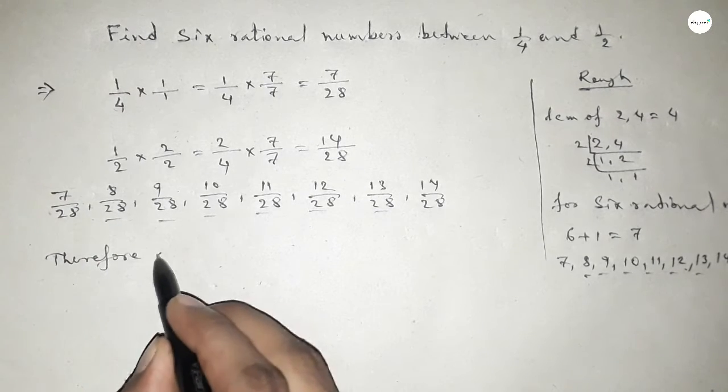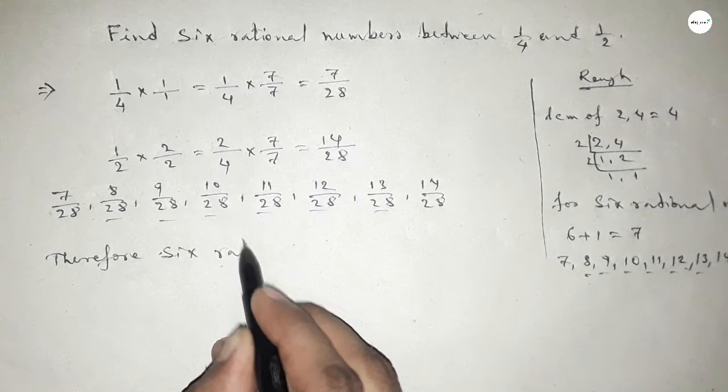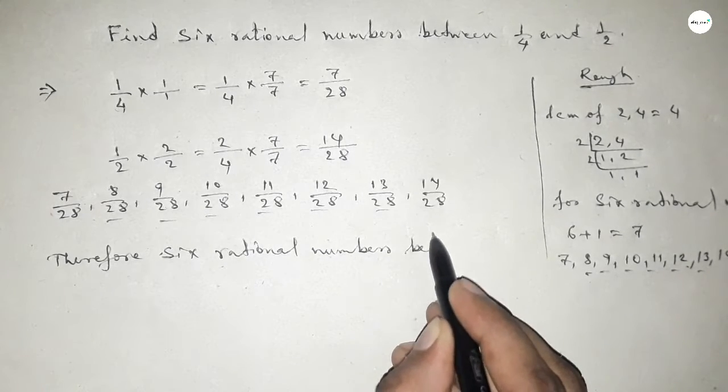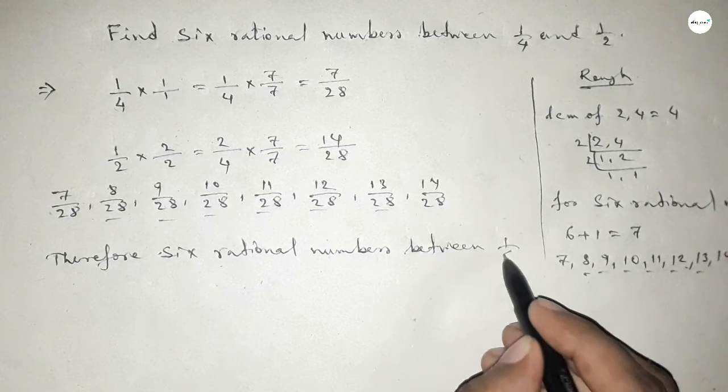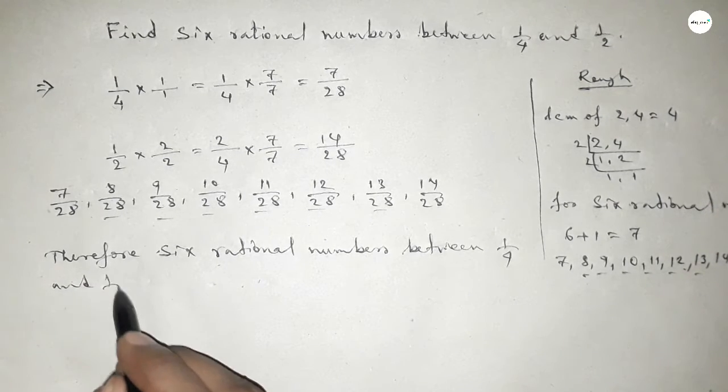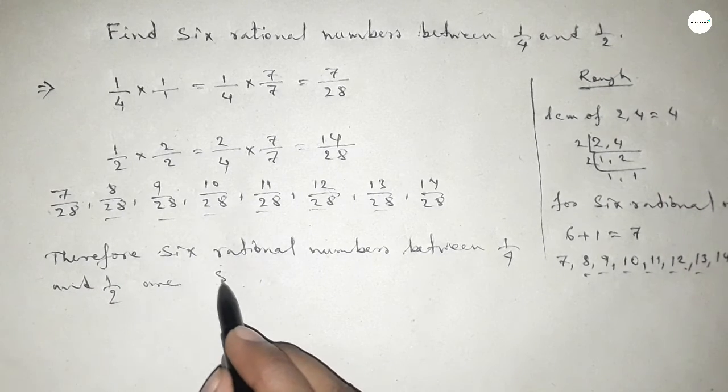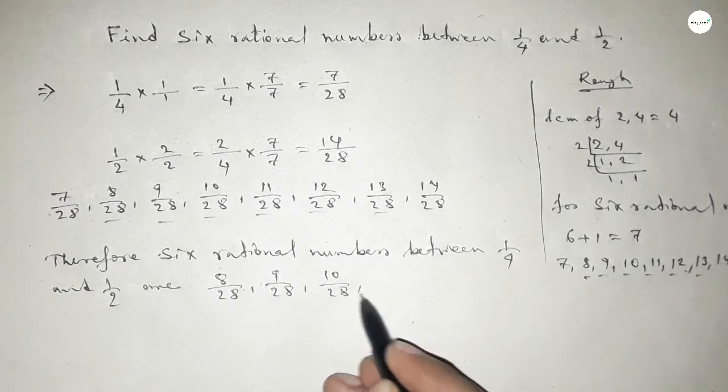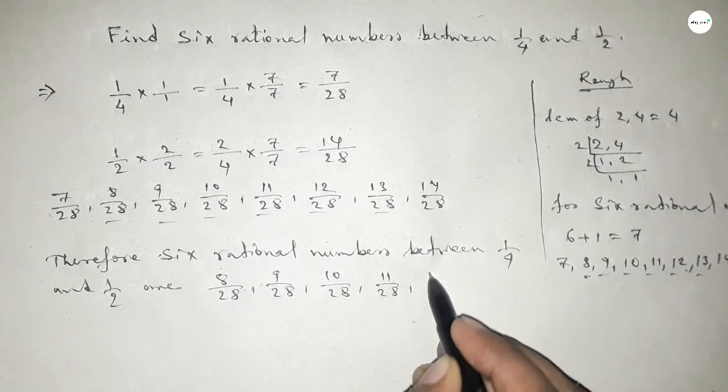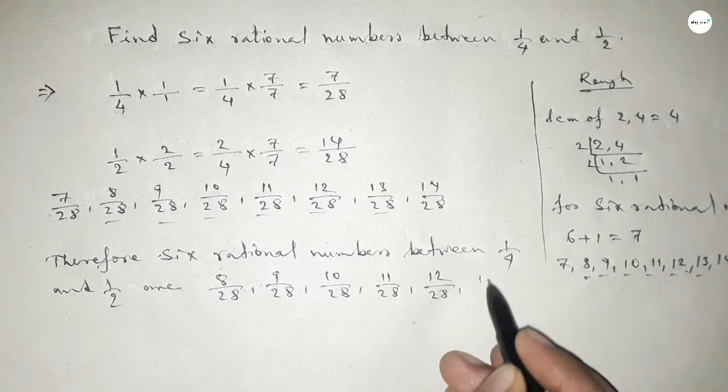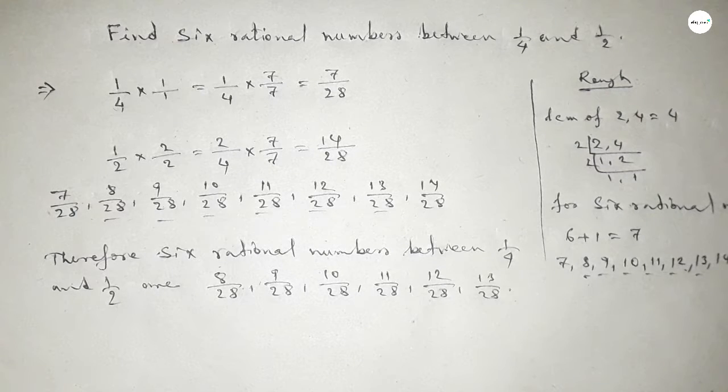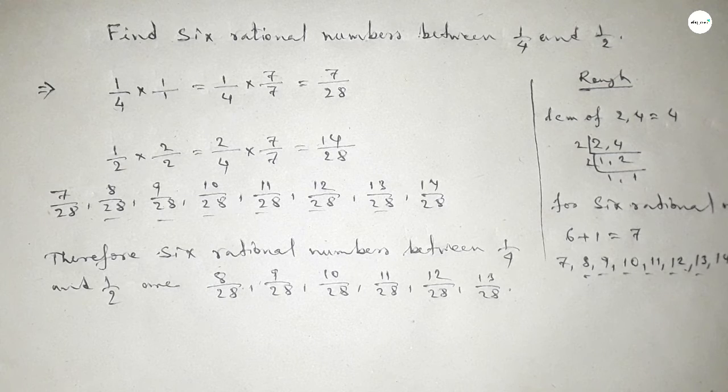Therefore, six rational numbers between 1 over 4 and 1 over 2 are: 8 over 28, 9 over 28, 10 over 28, 11 over 28, 12 over 28, and 13 over 28. So this is the process to find out six rational numbers between 1 over 4 and 1 over 2. That's all, thanks.